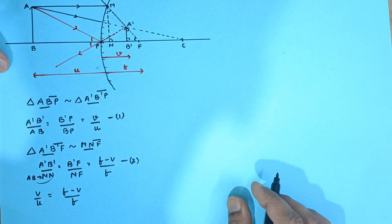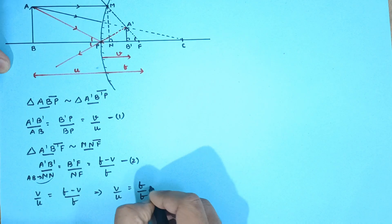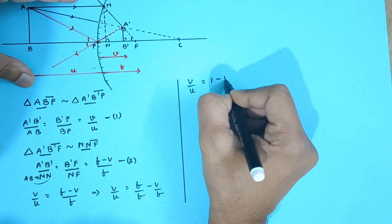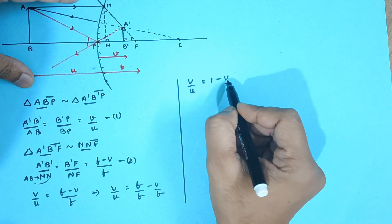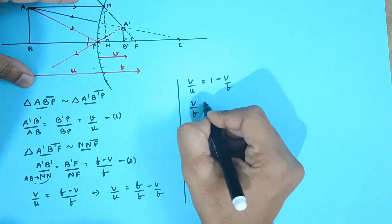Now we are going to solve this further. So V by U that is equal to F upon F minus V upon F. So this is V by U that is 1 minus V by F. So I am going to transfer this on this side and this on this side. So V by F that is equal to 1 minus V by U.